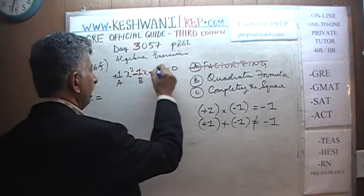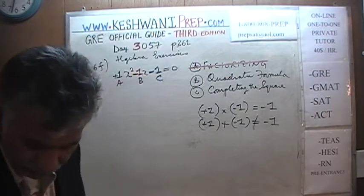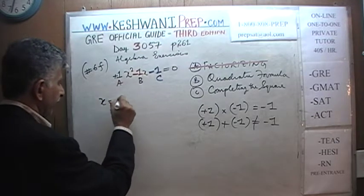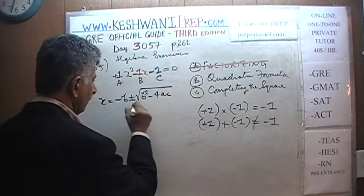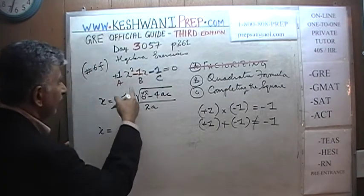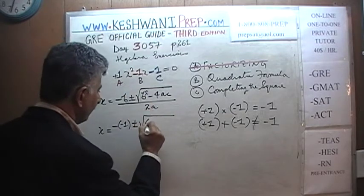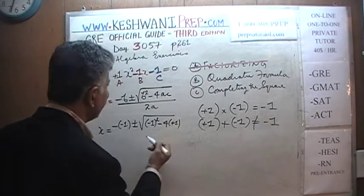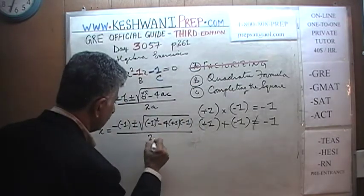Let's do it. x equals negative b — negative of negative one — plus or minus the square root of b squared, which is negative one whole squared, minus 4 times a, which is positive one, times c, which is negative one, whole thing over 2 times a, which is positive one.